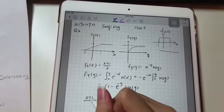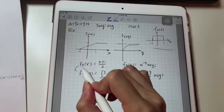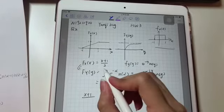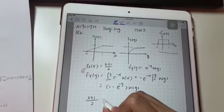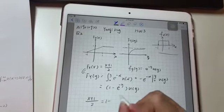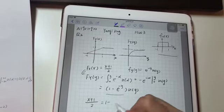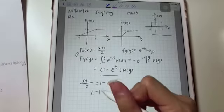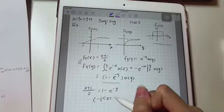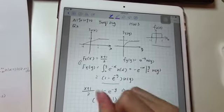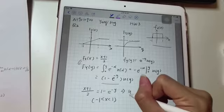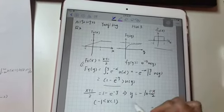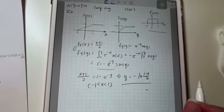So large F_X equals large F_Y. So that is (x + 1) divided by 2 equals this expression. Under the condition x is between minus 1 to 1, we can solve this equation and get y equals this expression.